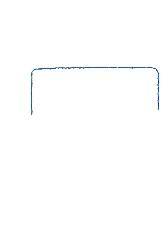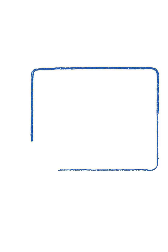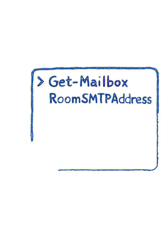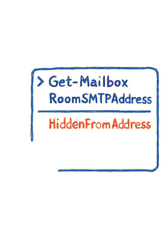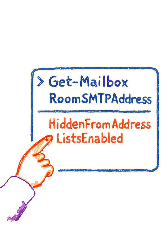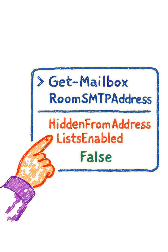Next, verify each room is visible in the global address list by checking Get-Mailbox with the room's SMTP address, and confirming that HiddenFromAddressListsEnabled is false.